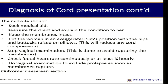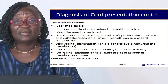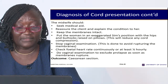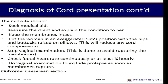Management: reassure the client. Place the woman in an exaggerated Sims position — on her hands and knees with the abdomen raised between — to push the weight of the baby off the cord and improve oxygen supply to the fetus. Stop vaginal examination to avoid rupturing membranes. Check the fetal heart rate continuously or at least every 15 minutes. Do vaginal examination to exclude prolapse as soon as membranes rupture. Caesarean section may be needed to prevent fetal distress.